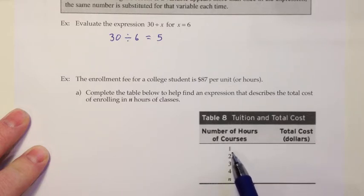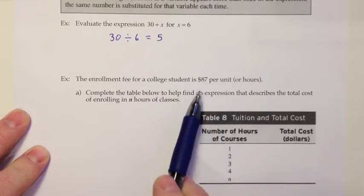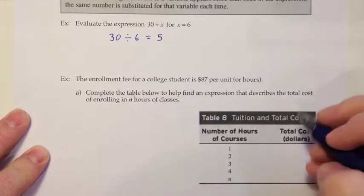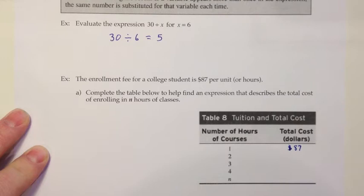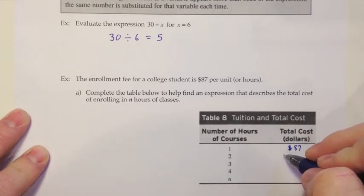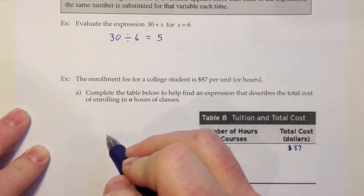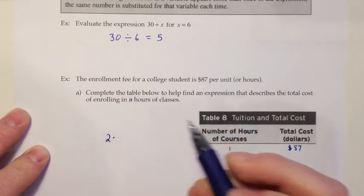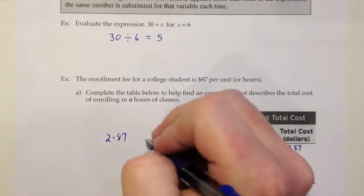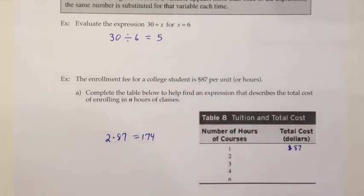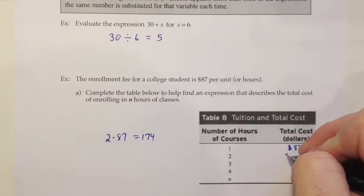If the student is taking one unit or one hour, how much is that going to cost? It's $87 per unit or hour, so one unit would cost $87. What if they take two units? It should cost twice as much. I would do two times that $87, and I'm just going to do that over here on my calculator.